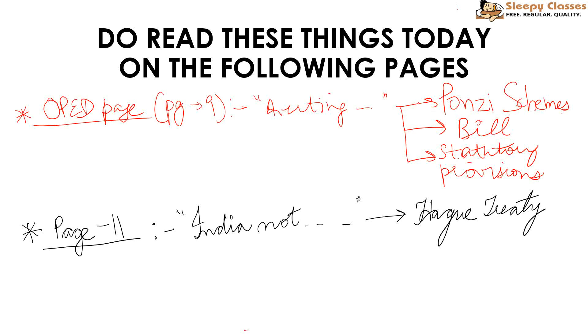2. Bill. 3. Statutory Provisions Ponzi Scheme related. And there are any clauses, so that you have to see. I give you idea that you can see in IPC.